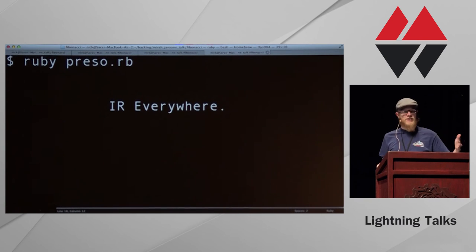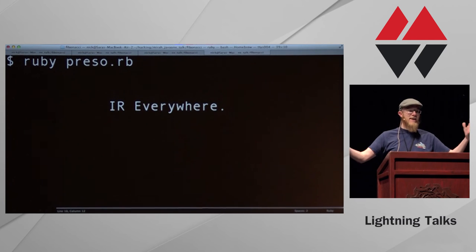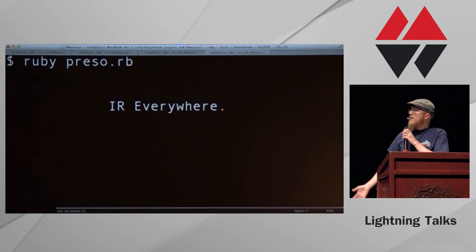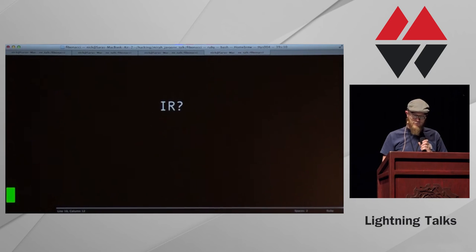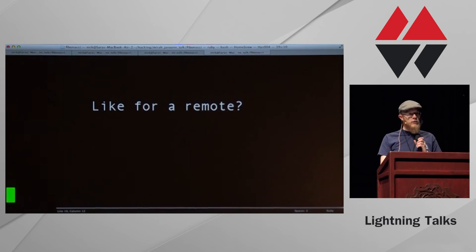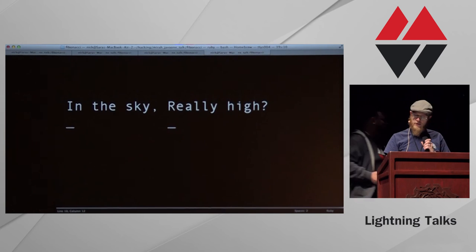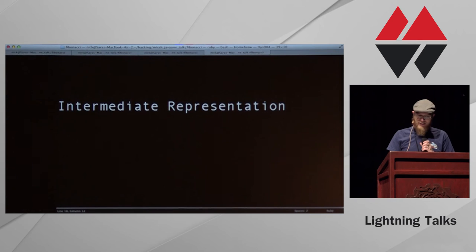My latest talk is 'IR are everywhere.' When I was watching Tenderless talk, it reminded me of this - Ruby has bytecode, and that's pretty awesome. What does IR mean? Is it infrared, like remotes? No. Is it skyscrapers, really high? No. It's compiler-y lingo. Intermediate Representation is what it means. You could talk about assembly, Java bytecode, Ruby's IR, or JRuby's IR.